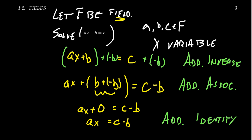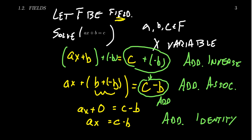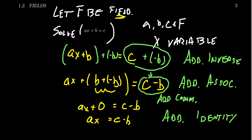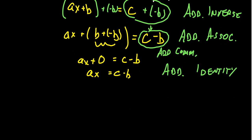We used the inverse axiom, associativity, and identity. We also used commutativity — the fact that subtraction is a well-defined operation is a consequence of inverses but also commutativity, because C minus B means C plus negative B, and we need commutativity to define that. So we've got rid of the plus B. Usually when you work an algebra question like this — AX plus B equals C — you'd just write minus B, minus B, cancel, and get AX equals C minus B as a one-liner. That's because you're so accustomed to the field axioms that you can do it quickly. If you can do that for real numbers, we can do that for any field.